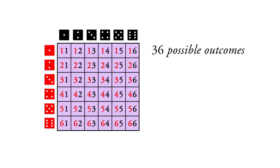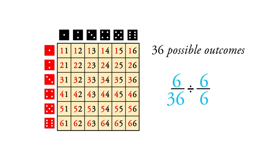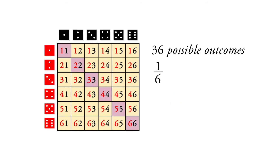You can see that the winning combinations are six of those — this one, this one, this one, this one, this one, and this one. So if we look at those six out of 36, we see we have a one in six chance of winning.